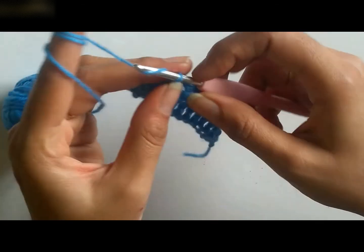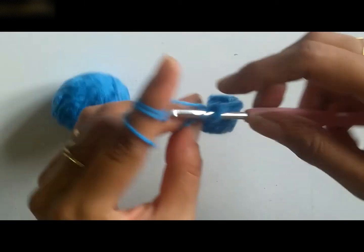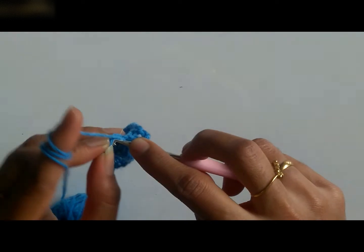That is double crochet followed by two chains. Again a double crochet in the same stitch. So this is how a V-stitch is done. I hope this is clear to you.